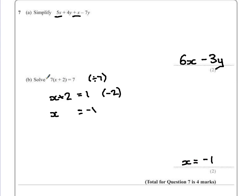You could have also chosen to expand out the brackets to give 7x plus 14, taking away 14 from both sides, which gives you negative 7 on the right, and dividing by 7 that way, you should still get the same answer.